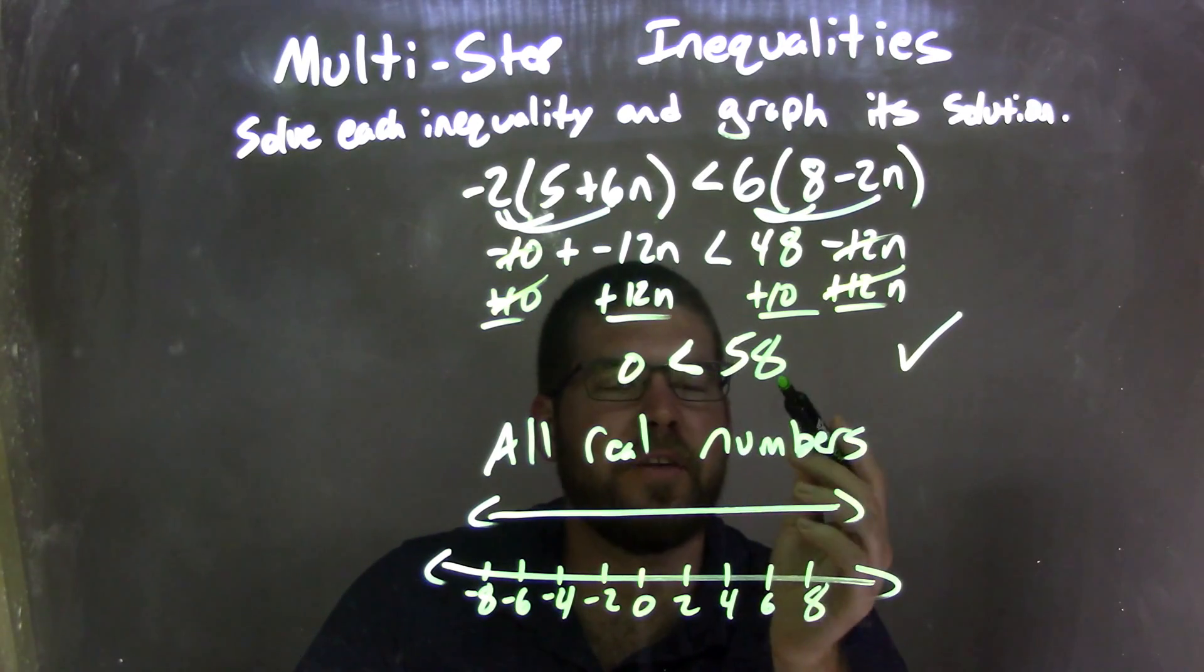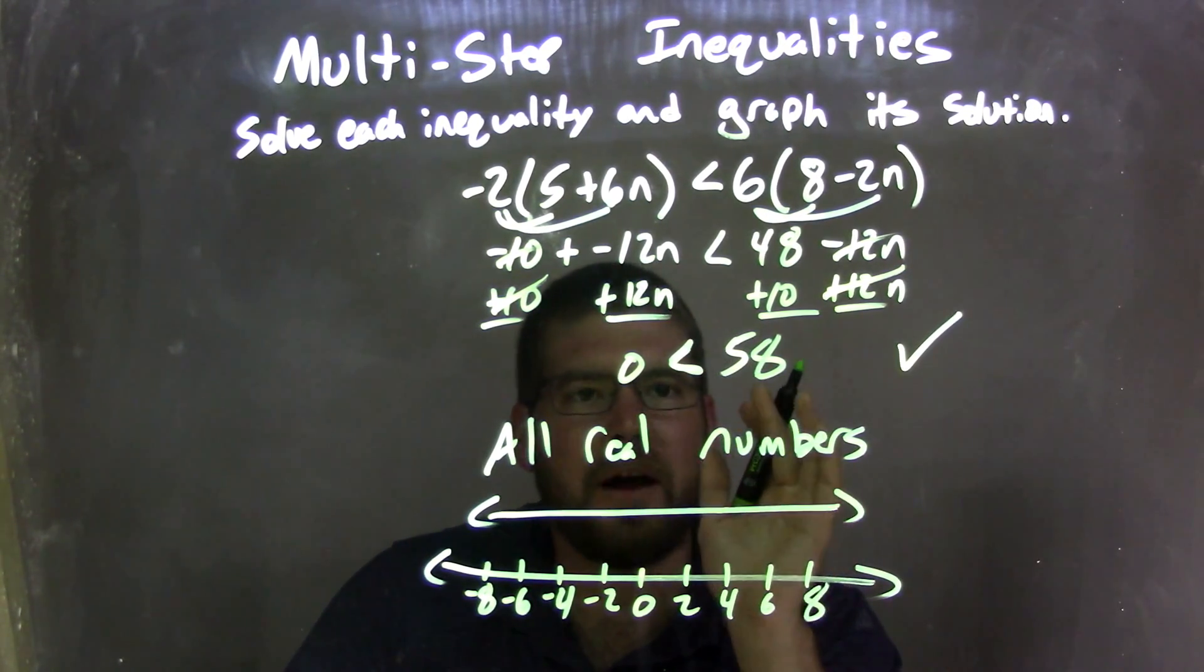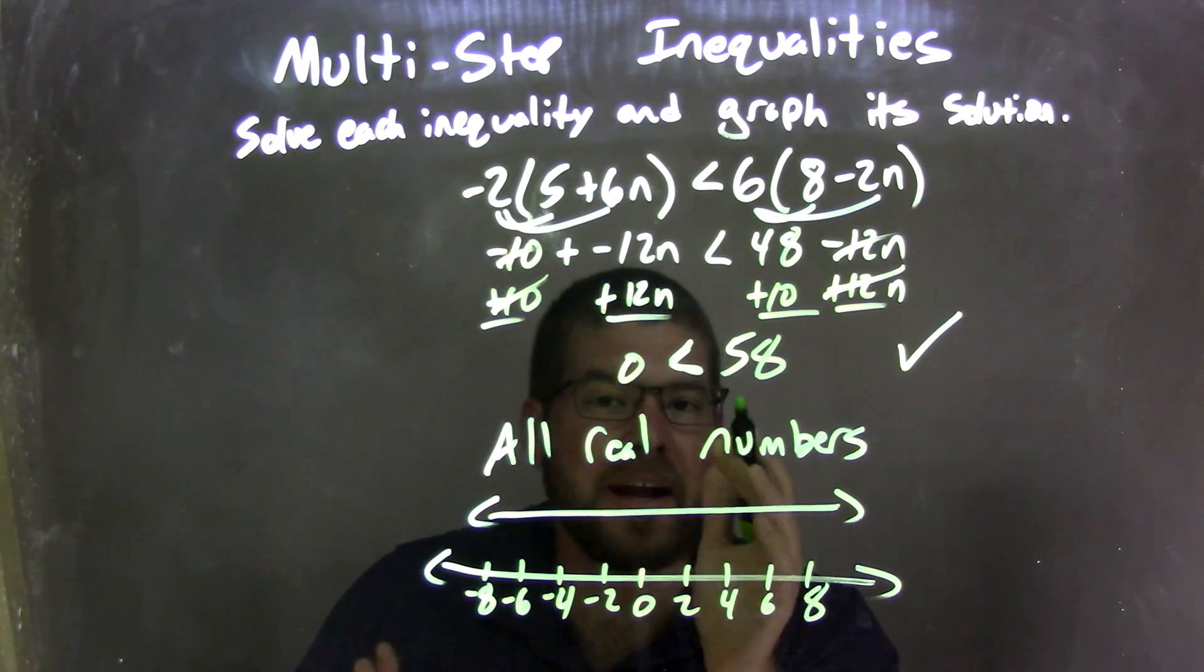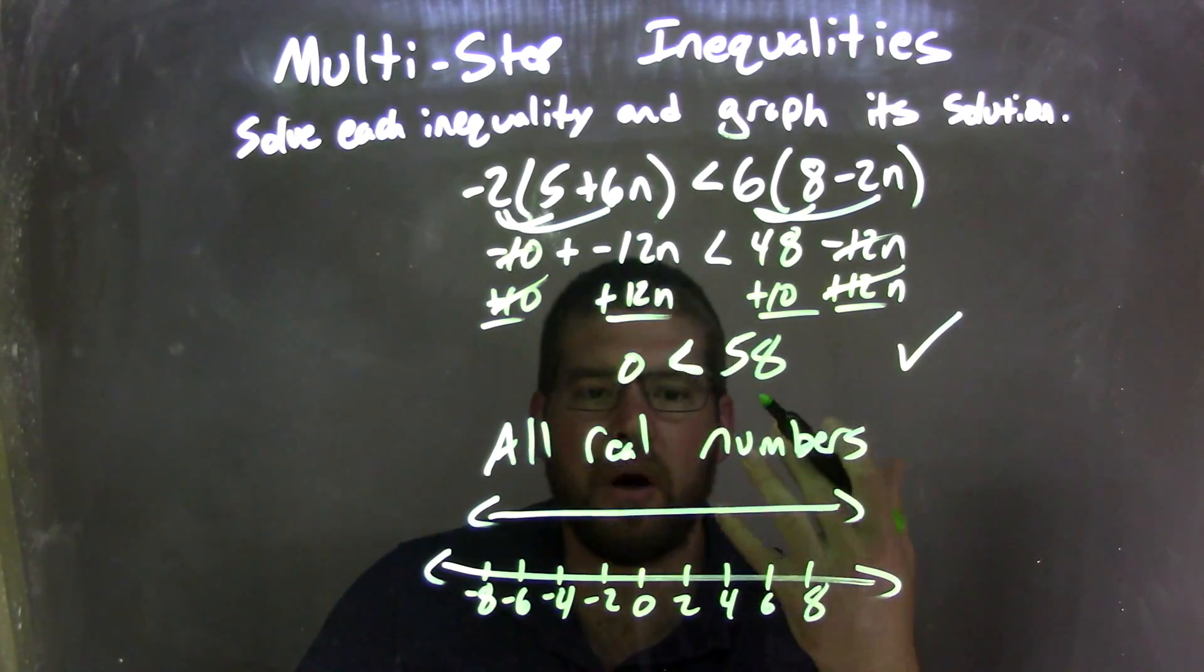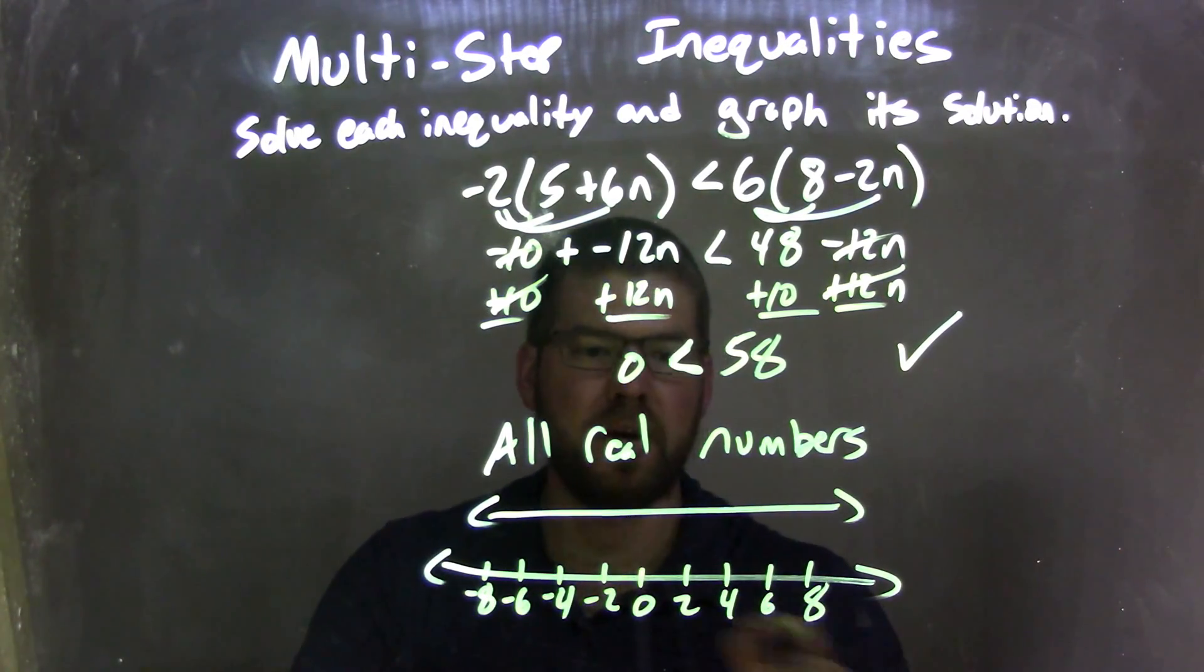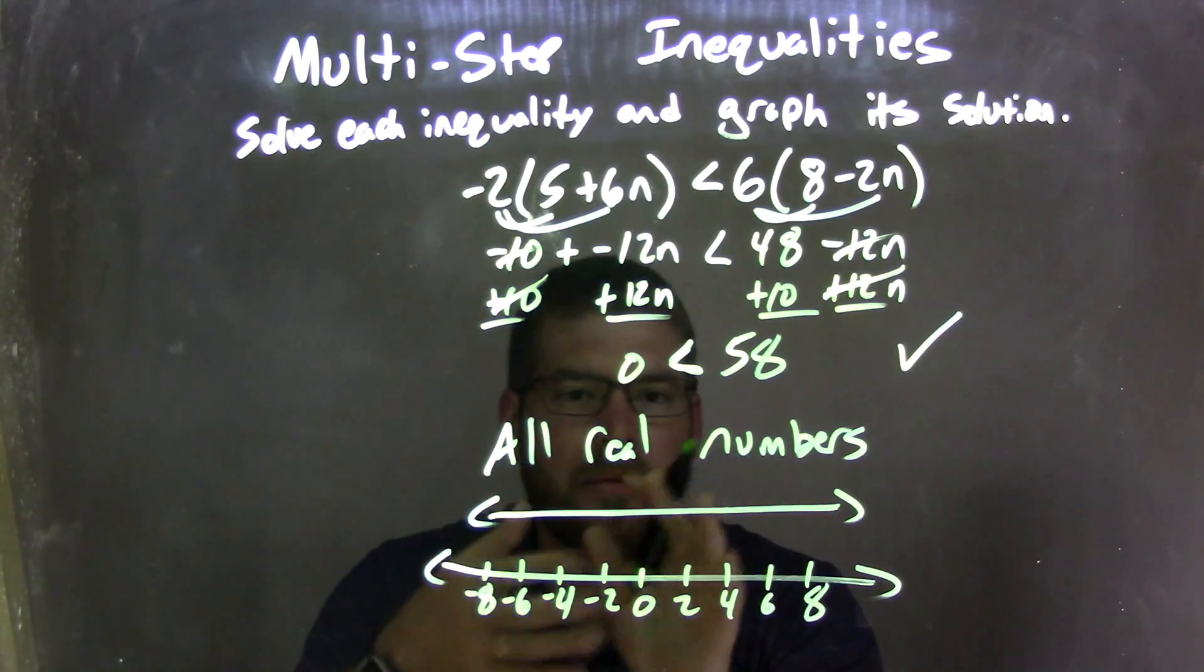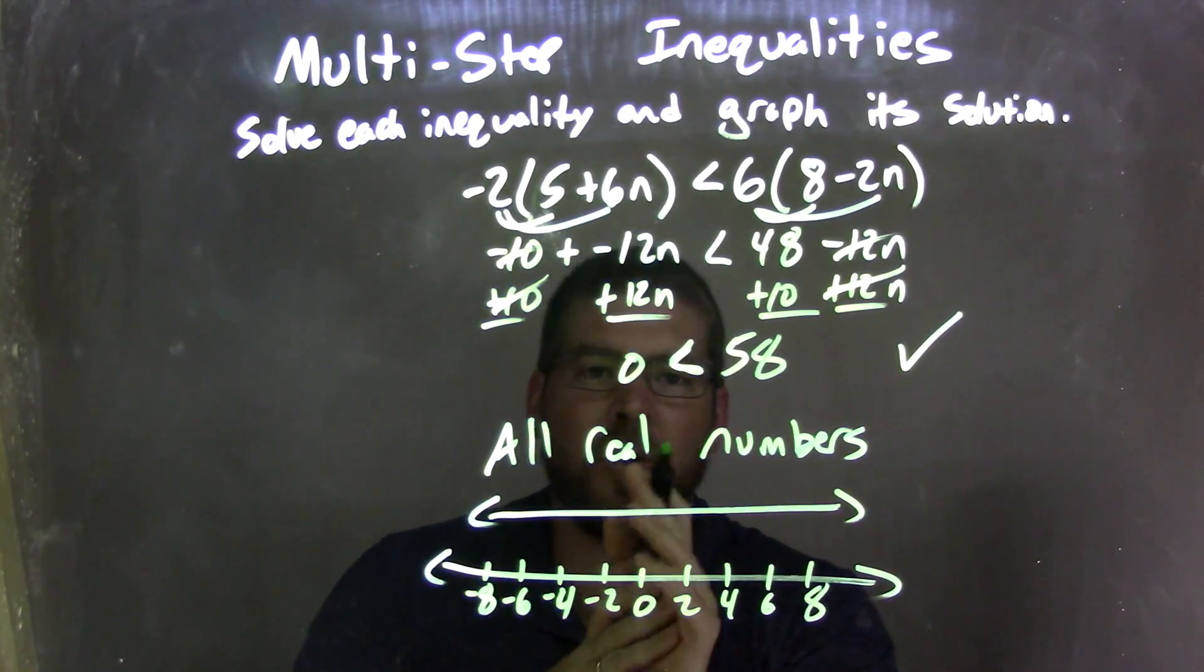So 0 is less than 58. That is a true statement with just numbers, and so if that happens, our answer here is all real numbers. Any real number will work for this inequality. So to graph that, I have a line that just goes in both directions forever and ever, showing that every single real number here would work. So now my graph matches my final answer of all real numbers.